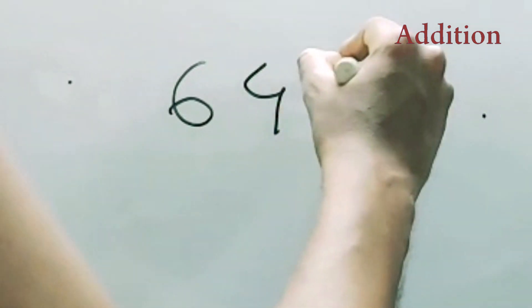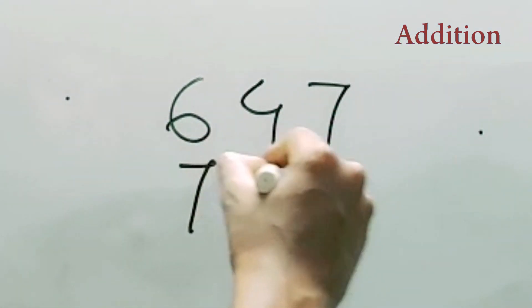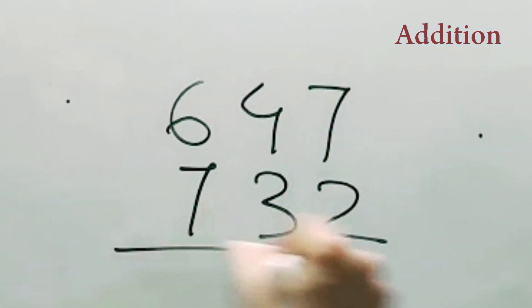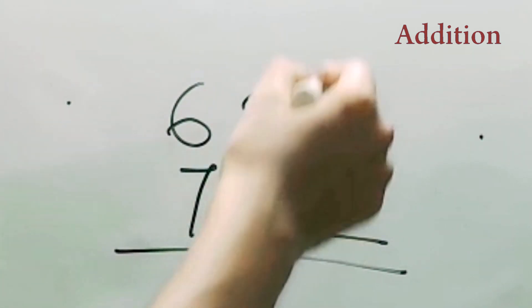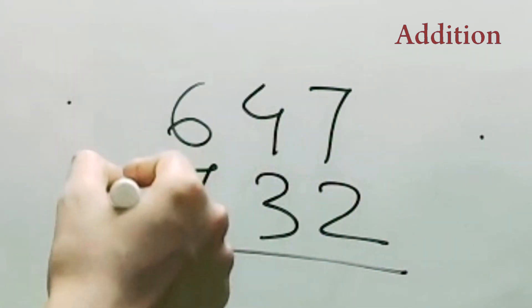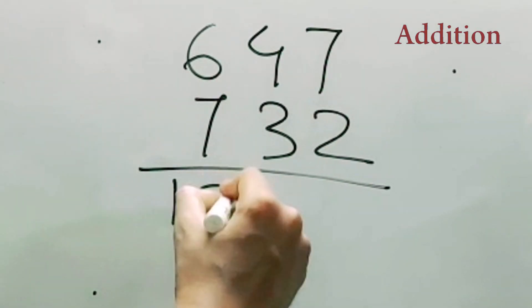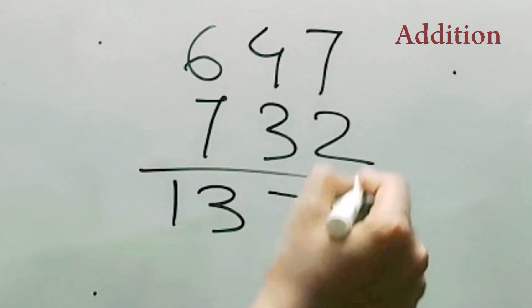Next one, that is 647 and 732. 700 plus 600, that is 1300, 4 plus 3, 7, 7 plus 2, 9, so 1379. You like it? Simplest way.